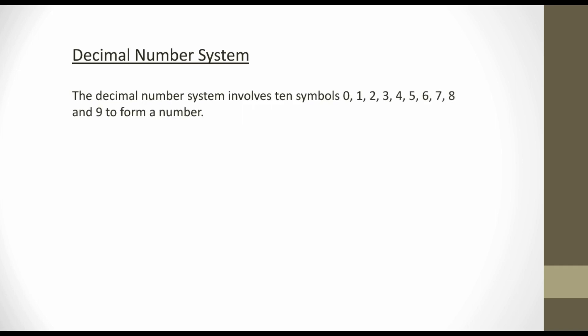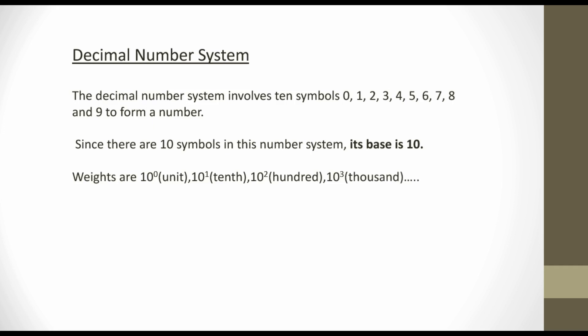Next, the decimal number system. What is the decimal number system? The decimal number system involves the digits 0, 1, 2, 3, 4, 5, 6, 7, 8, and 9 to form a number. Since there are 10 symbols in this number system, its base is 10. As the base is 10, the weights are 10 raised to 0 (units), 10 raised to 1 (tens), 10 raised to 2 (hundreds), 10 raised to 3 (thousands), and so on. The decimal number system is the number system that we use in our day-to-day life to count.